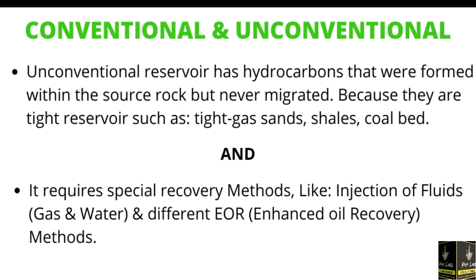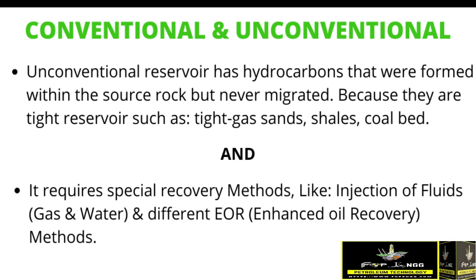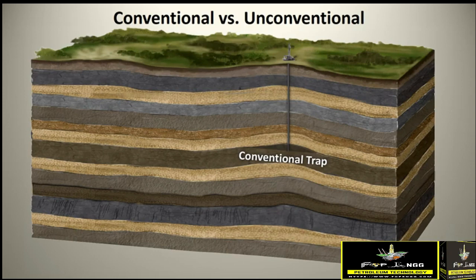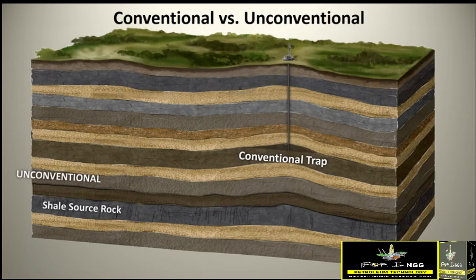Unconventional reservoirs are very tight reservoirs. They might be shales, coal bed methane, or tight gas sands. They require special recovery methods — enhanced oil recovery methods. As shown in this figure, one side is a conventional reservoir which is easily produced, and the other side is unconventional reservoirs which are very tight and require enhanced oil recovery methods to produce.